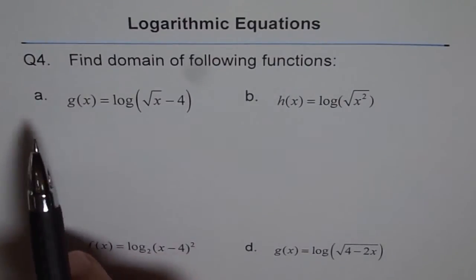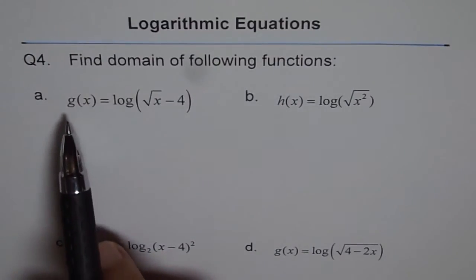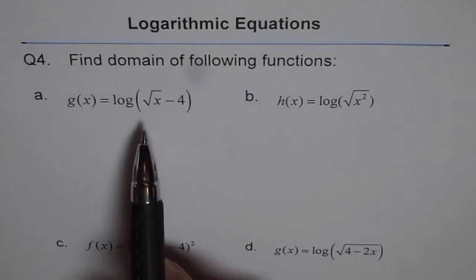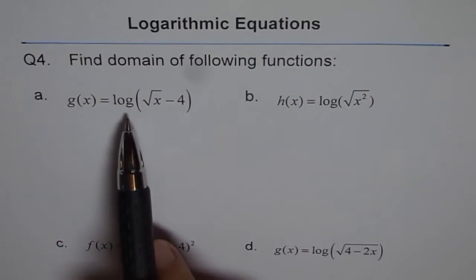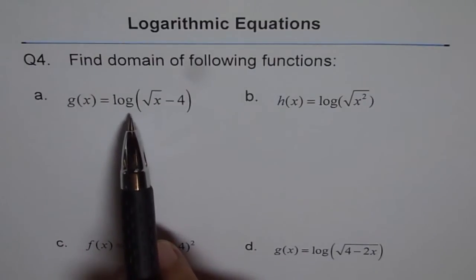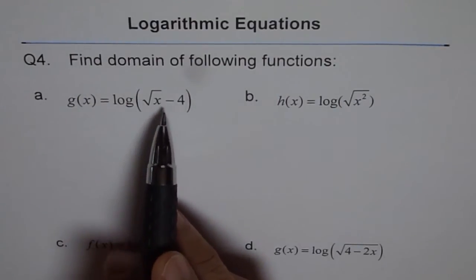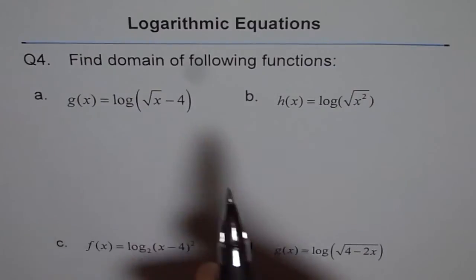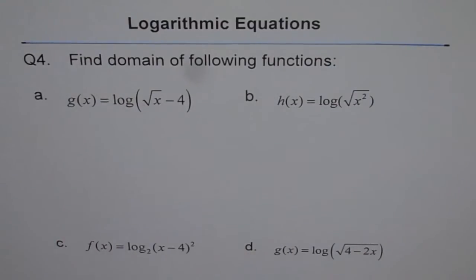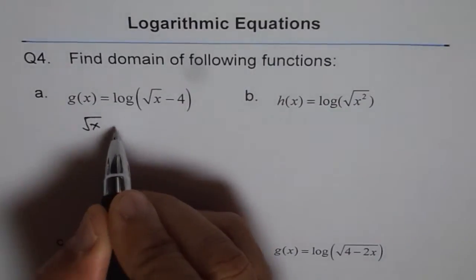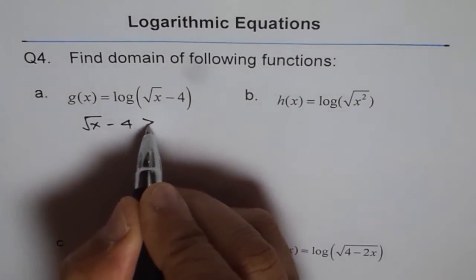That is why finding domain is very critical in solving any logarithmic equation. Let's get to the first one. G of x equals log of square root of (x minus 4). Since no base is mentioned, the base of this function is 10. Now, square root of (x minus 4) should be greater than 0 — that is what we are looking for.